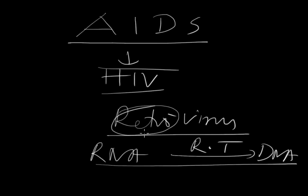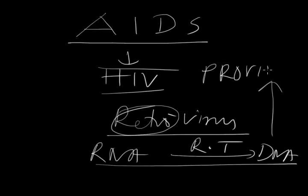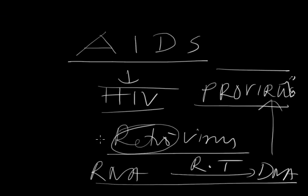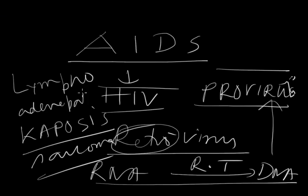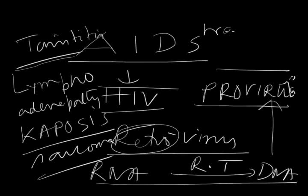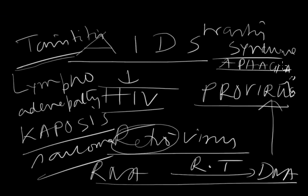There is a typical RNA-induced DNA conversion, and that DNA attacks the host DNA — this is called a provirus. The provirus makes many copies of DNA, which are associated with different disorders, causing diseases like Kaposi's sarcoma, lymphoadenopathy, non-target infections such as tonsillitis, wasting syndrome, loss of body weight, and aphagia — that is, loss of appetite.